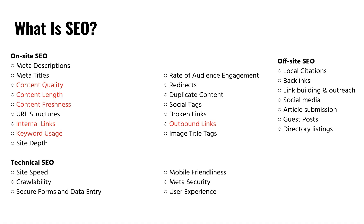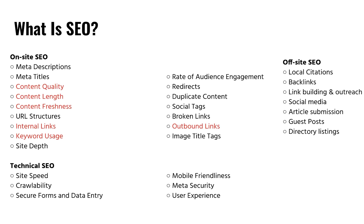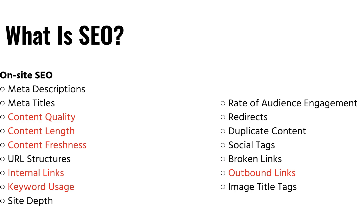This is a good place to talk about what search engine optimization is. When looking at SEO, you're primarily looking at it through three categories. On-site SEO covers your meta descriptions, meta titles, quality of content, content length, freshness, URL structures, internal links, keyword usage, site depth, audience engagement rate, redirects, duplicate content, social tags, broken links, outbound links, and image alt and title tags.